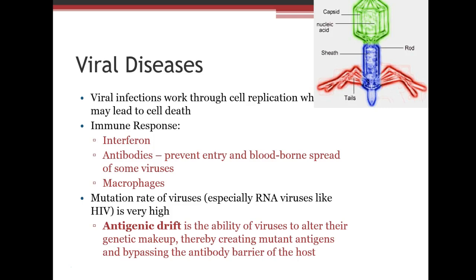The body uses interferon, antibodies, and macrophages to fight viruses. However, viruses have a high mutation rate. Antigenic drift is the ability of viruses to alter their genetic makeup, creating mutant antigens and bypassing the antibody barrier of the host — making them tricky to fight.